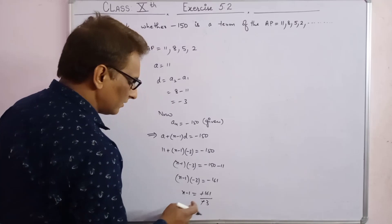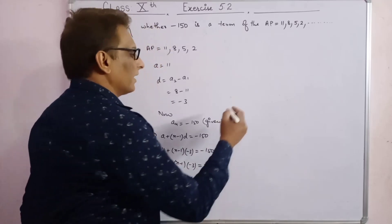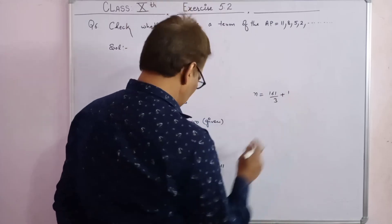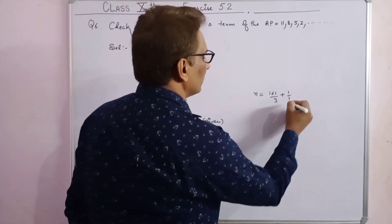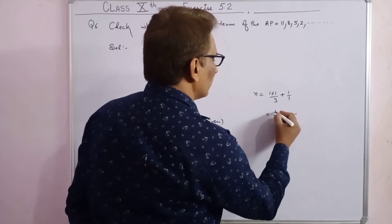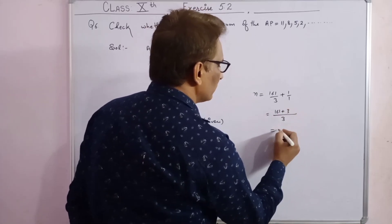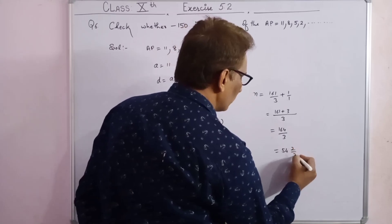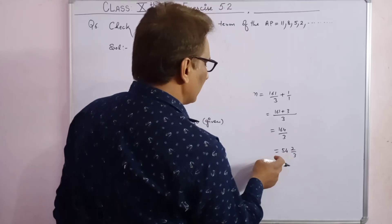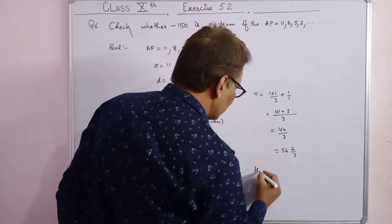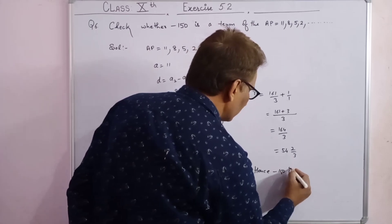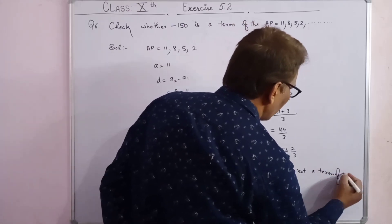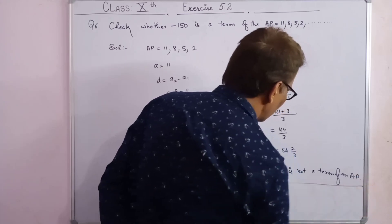Therefore n minus 1 equals minus 161 upon minus 3, which simplifies to 161 upon 3. Since 161 upon 3 is not a whole number, minus 150 is not a term of this AP.